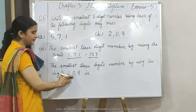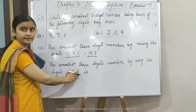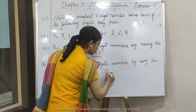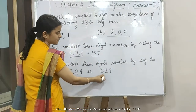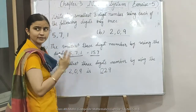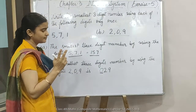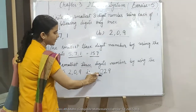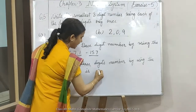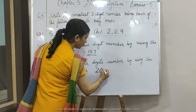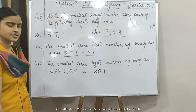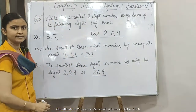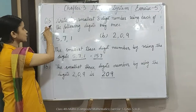अब देखें, यहाँ पर आपको दिया हुआ है: 2, 0, 9। अगर आप 0 पहले लेते हैं, तो number होगा 029 — लेकिन अगर आप 0 पहले लेते हैं, तो कितने digits का number हुआ? 2 digits का। लेकिन हमें 3 digits का बनाना है। तो इसलिए हम पहले 2 लेंगे, उसके बाद 0, then 9। तो हमारा smallest 3-digit number होगा 209।